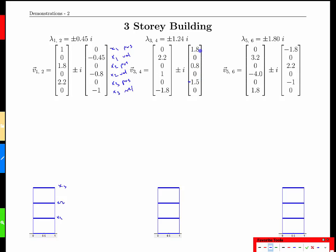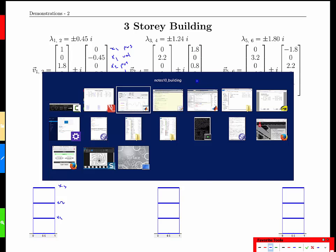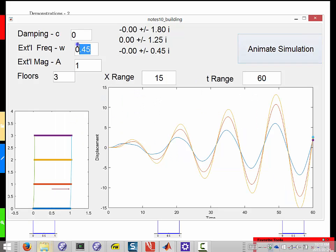So here we expect somehow the first and second floors to move in the same direction, with the first floor moving more, and then the third floor moving in an opposite direction. Let's see how that plays out.